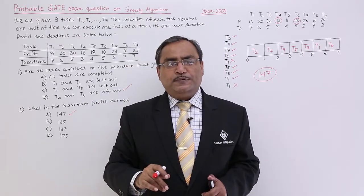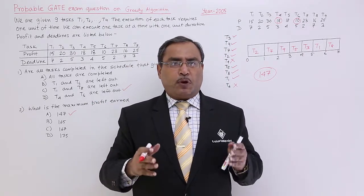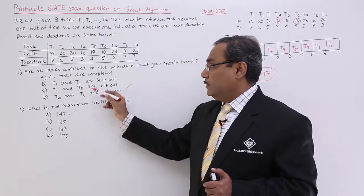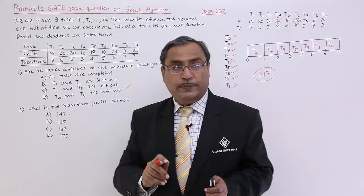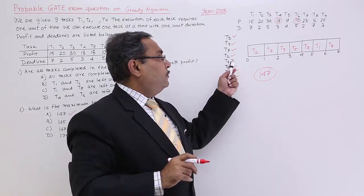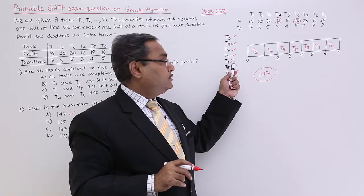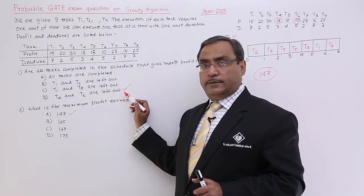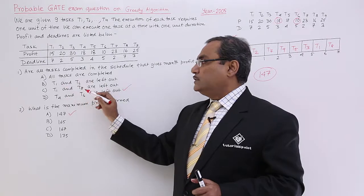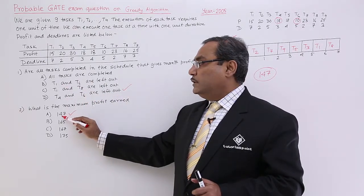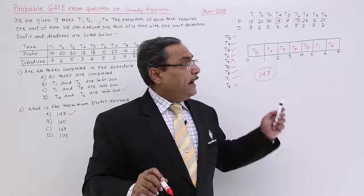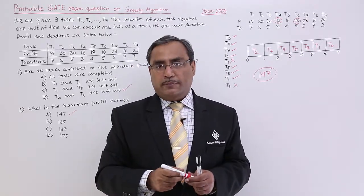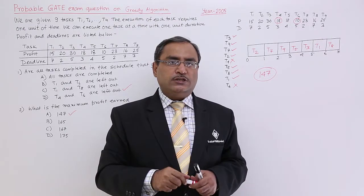In this way, job sequencing with deadline, this sort of problems can easily be solved. Do the rough work very quickly and get it solved in this way. Now see one thing. Here I got that T4 cannot be allocated, so from here I can easily put a tick on option D because other options are not matching. But as I am supposed to calculate this maximum profit, I had to carry out up to the last. Always try to save your time while solving such problems. Thanks for watching this video.